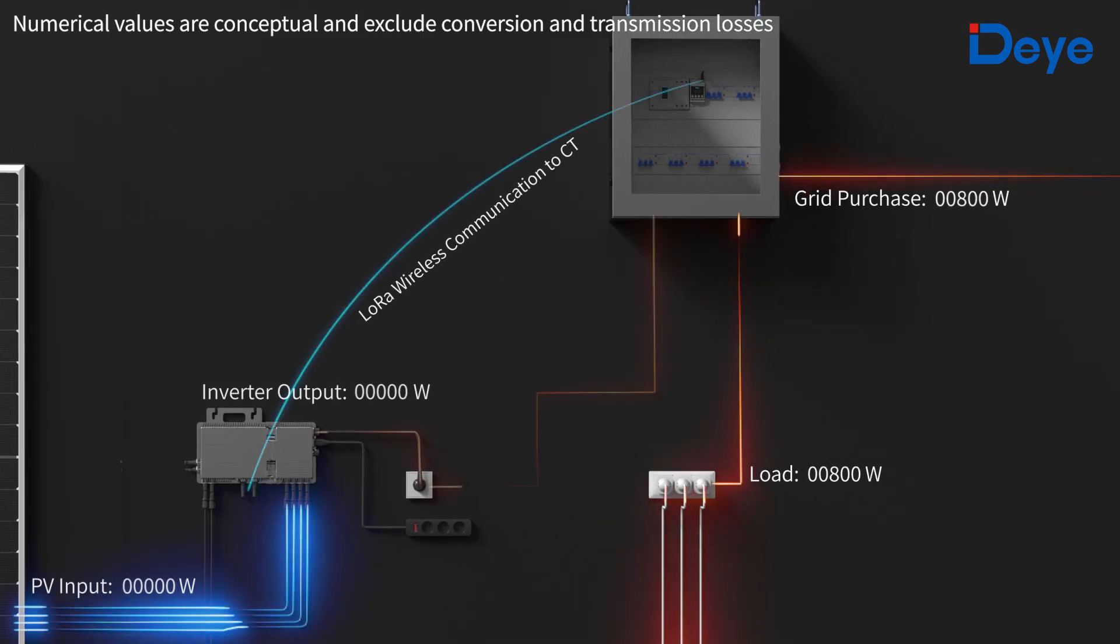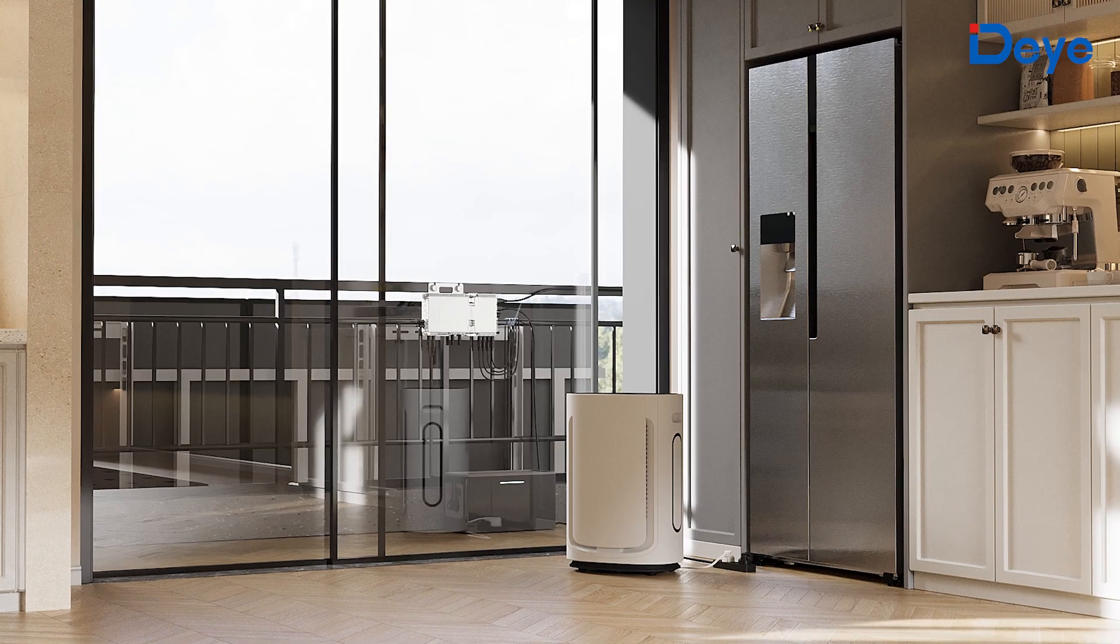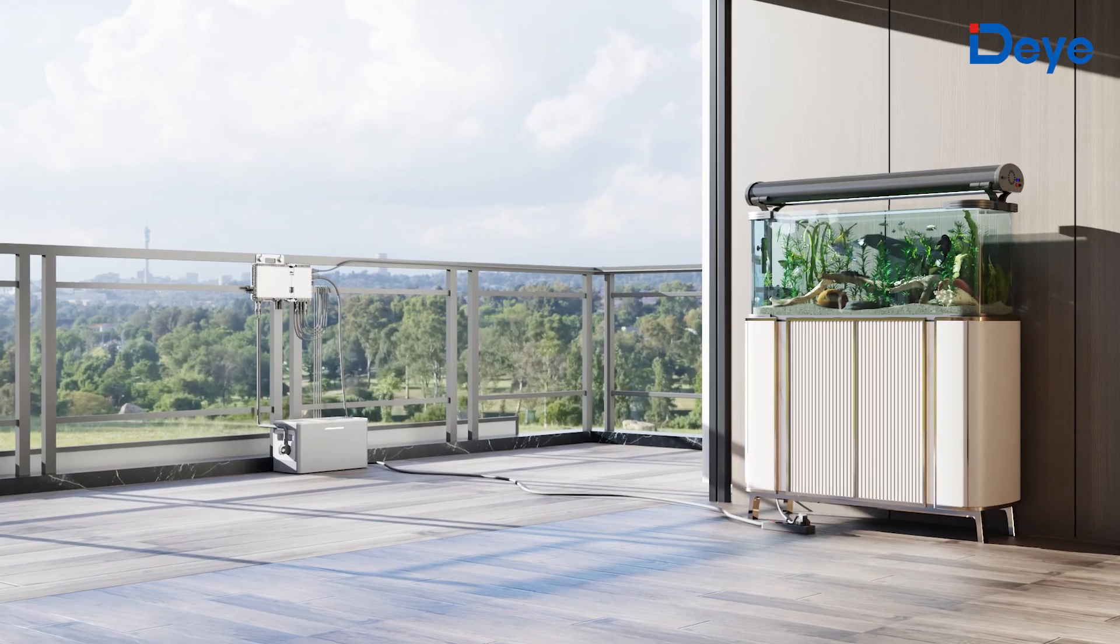During the day, solar power can reduce the power consumption of household, decreasing reliance on electricity purchased from the grid. Any excess photovoltaic power will be stored in the battery, and this stored power can be utilized at any time throughout your home.